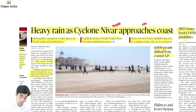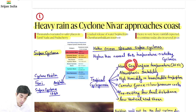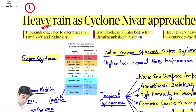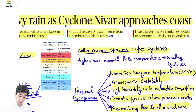Heavy rain as Cyclone Nivar approaches coast. Cyclogenesis hota hai Bay of Bengal mein — ocean mein phir cyclone move hota hai towards land. Land pe jis point pe wo land se contact kar raha hai usko bolte hai landfall. Landfall hote hi cyclone ka source — warm oceanic water — se disconnect hota hai aur cyclone weak hone lag jata hai. Thousands ko evacuate kiya, safer place pe — Tamil Nadu, Puducherry. Evacuation hua, gradual release hua.